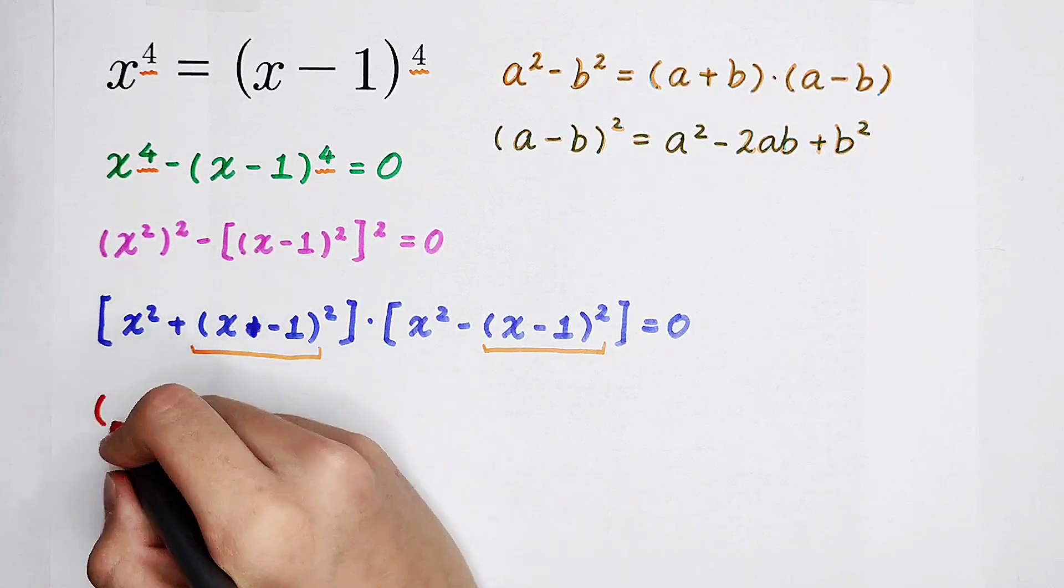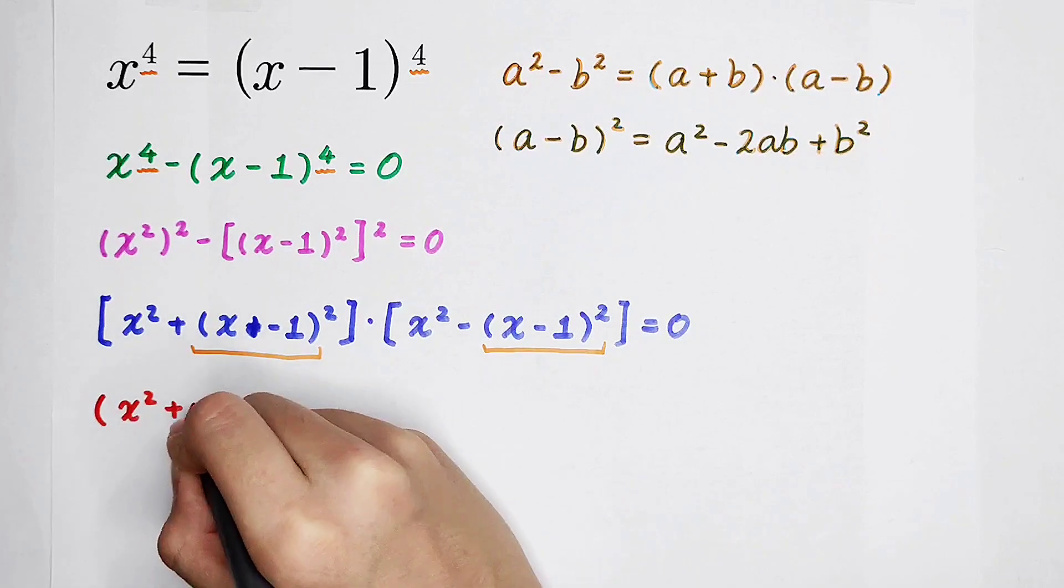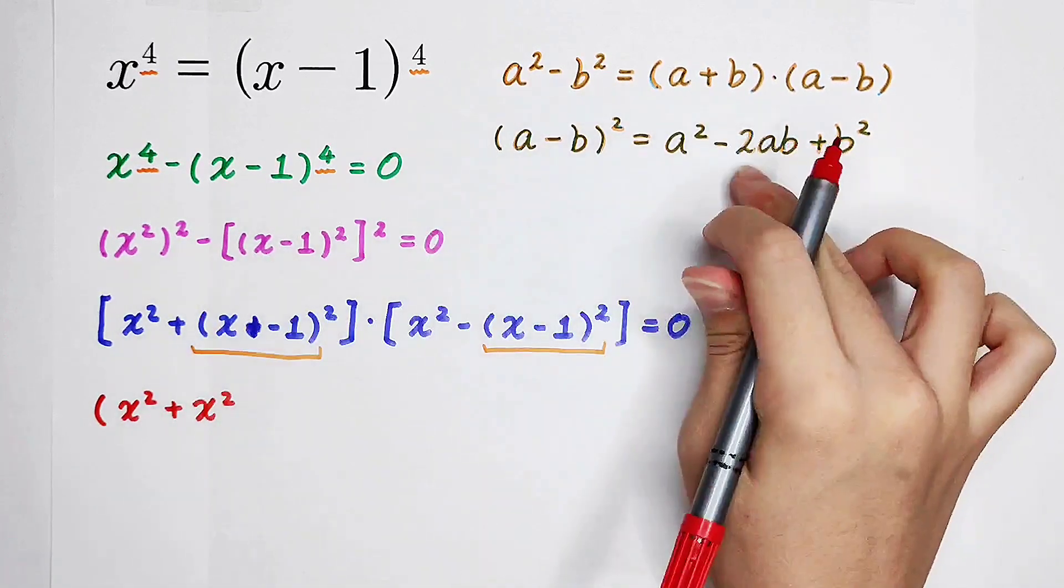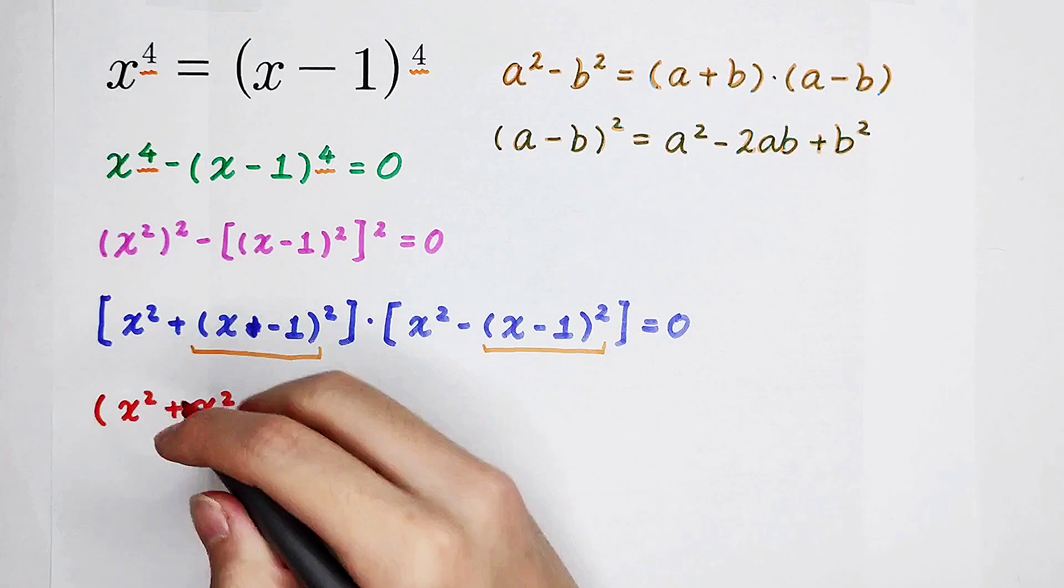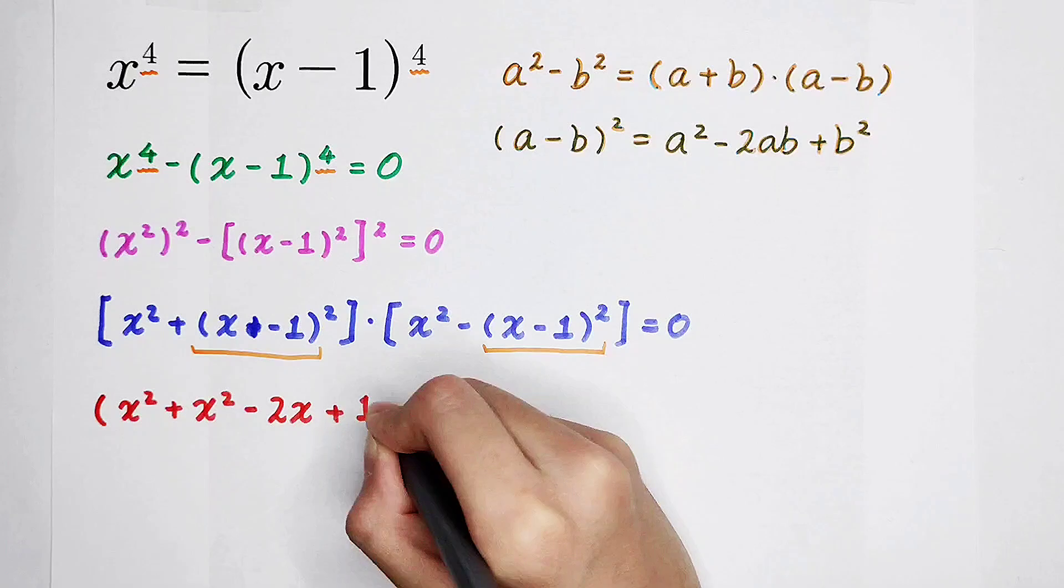So, in this bracket, it is x squared plus x squared minus 2 times x times 1, which is minus 2x, and then you should plus 1.